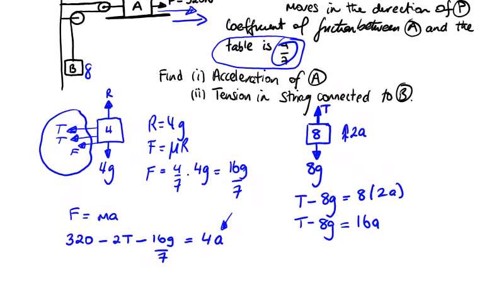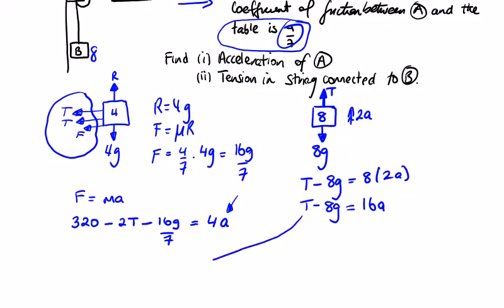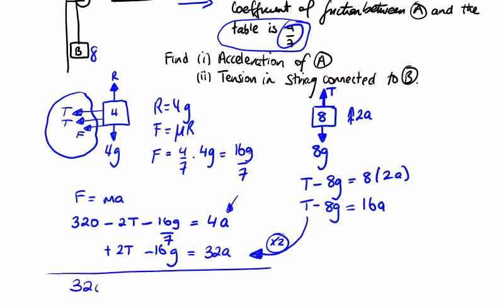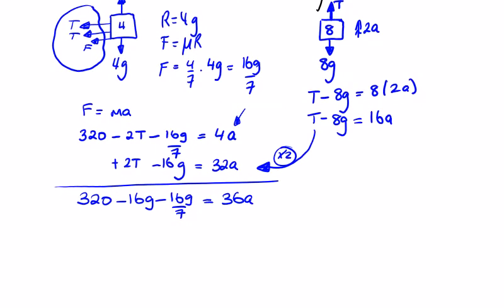And we want to get rid of those T's. So bring this down and multiply it by 2. We're going to get plus 2T minus 16g is equal to 32a. Combining these two lines, we're going to get 320 minus 16g minus 16g over 7 is equal to 36a. So if we simplify the left on the calculator, we get 140.8.